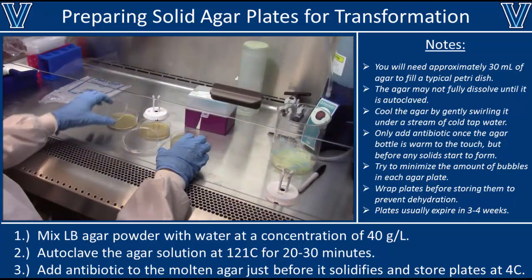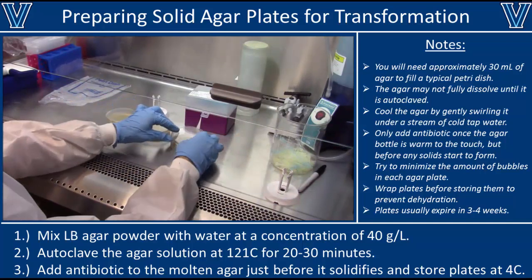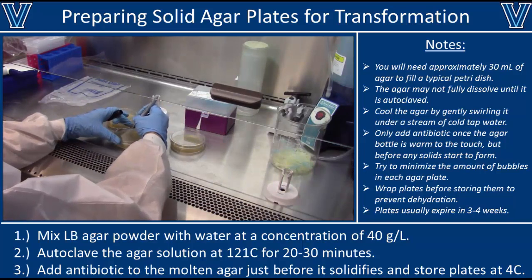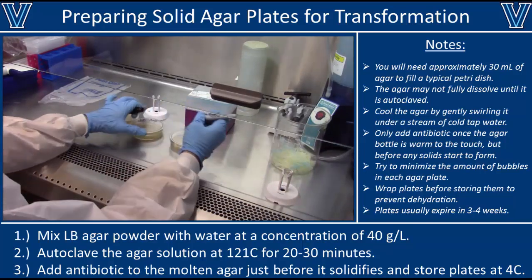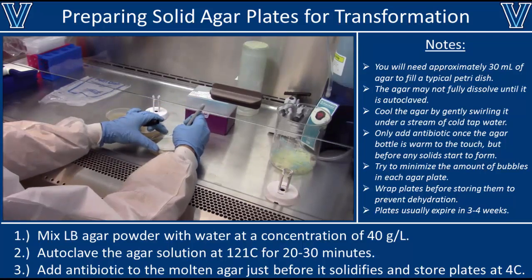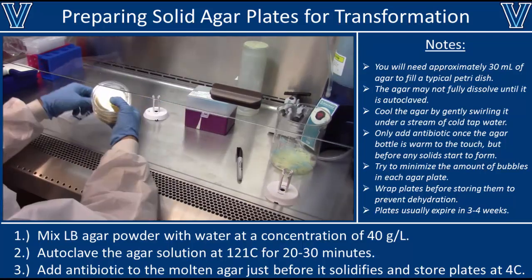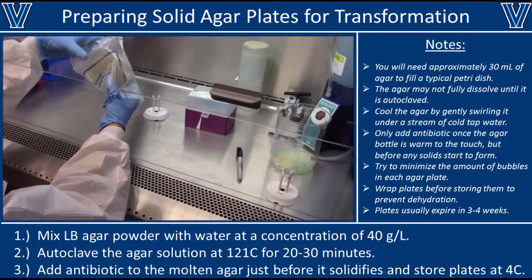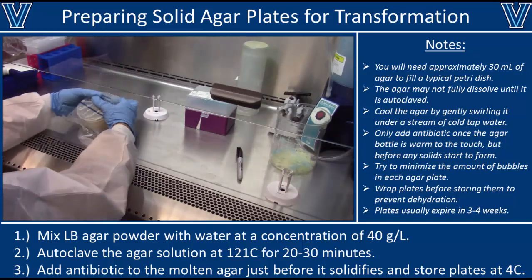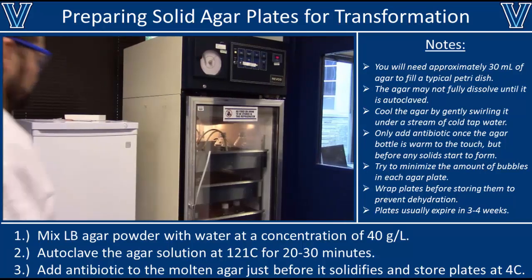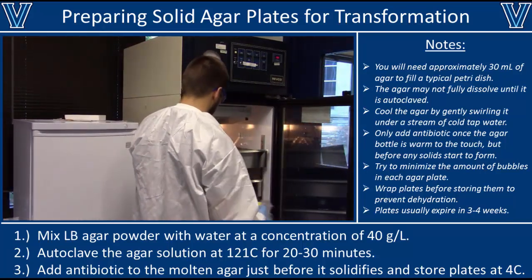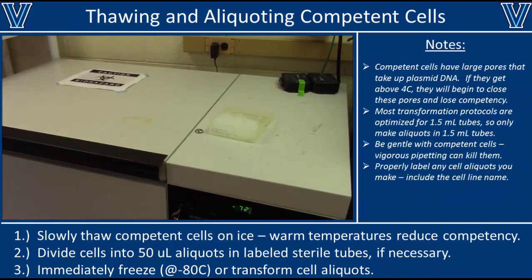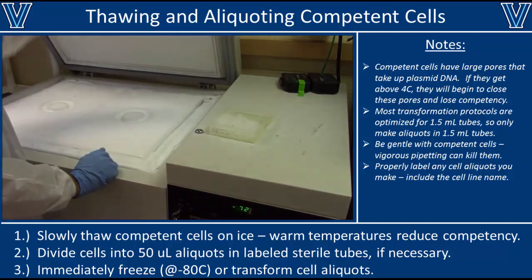Leave the poured plates in the BSC for an hour to solidify. Once they've solidified, put the lids back on and label them appropriately — include the type of media (LB) and the type of antibiotic used, in this case ampicillin. Carefully label each plate, then wrap them in plastic or foil to keep them from drying out. Once wrapped, you can keep them in the fridge for up to two to three months, depending on the antibiotic.